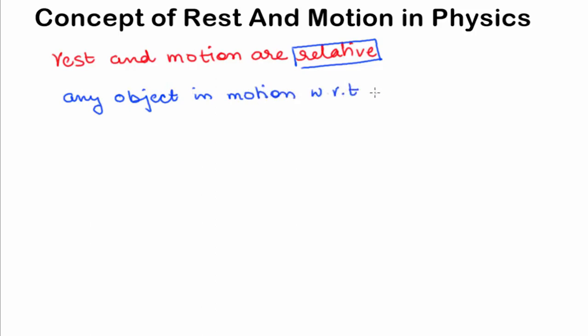Now let us look at the fact that both rest and motion are relative. This statement means that any object which is in motion with respect to one person or object might be at rest with respect to another person or object.